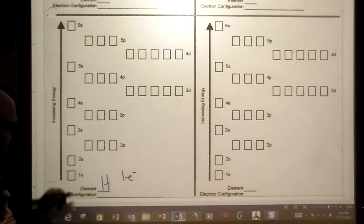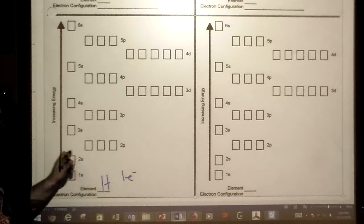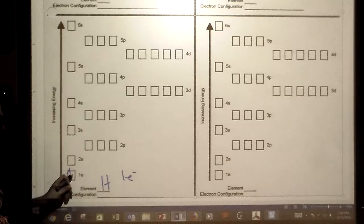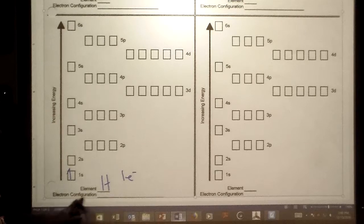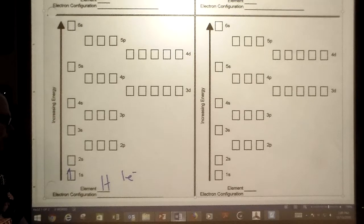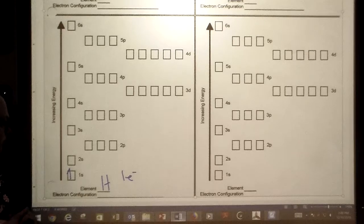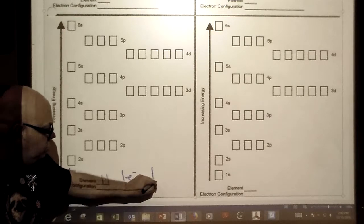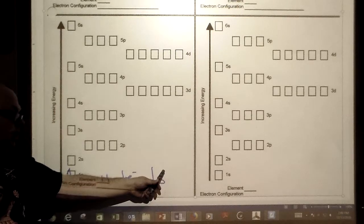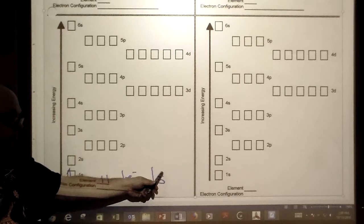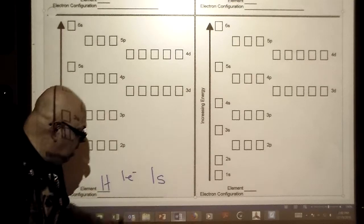We're going to draw an arrow that represents an electron. The electron is spinning, so we'll have the arrow go up for our hydrogen electron. This is orbital notation where we have an arrow inside the box labeled 1s. The electron configuration for hydrogen is 1s¹. You never need to put the 1 there.